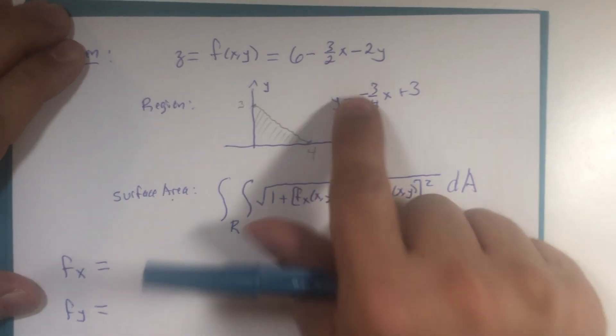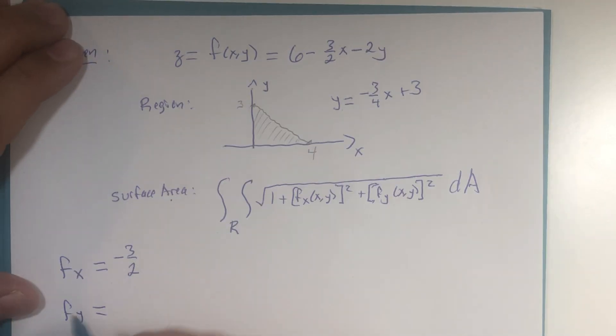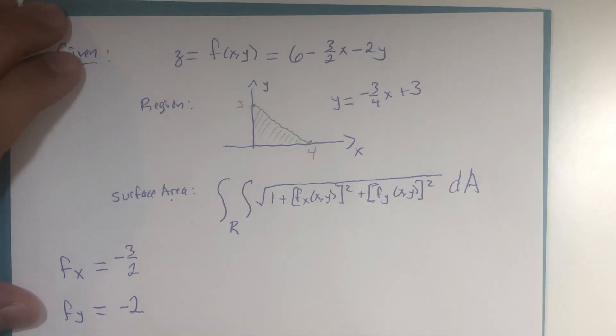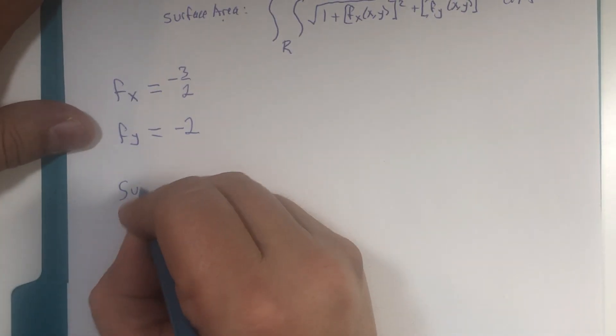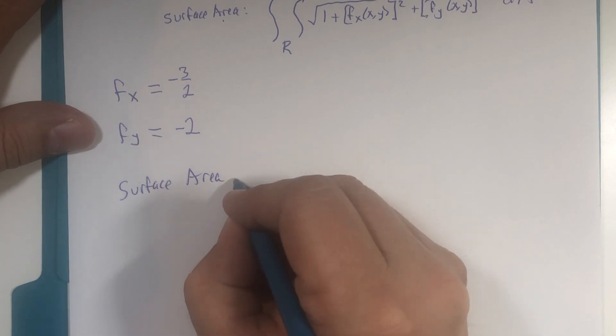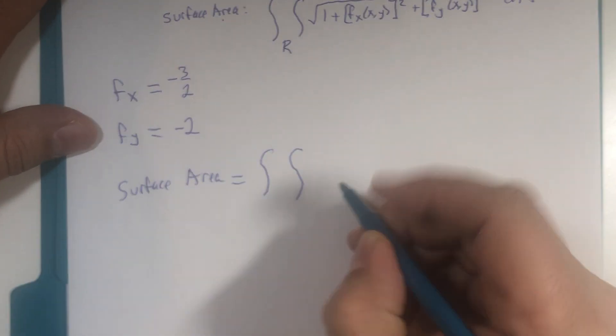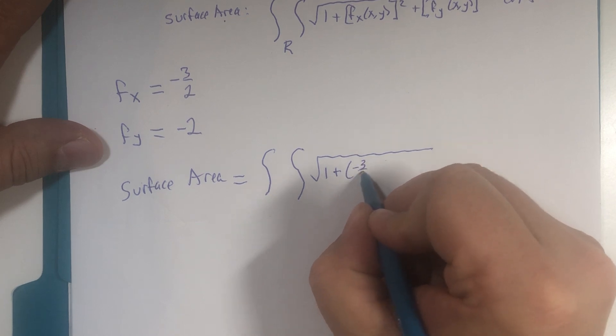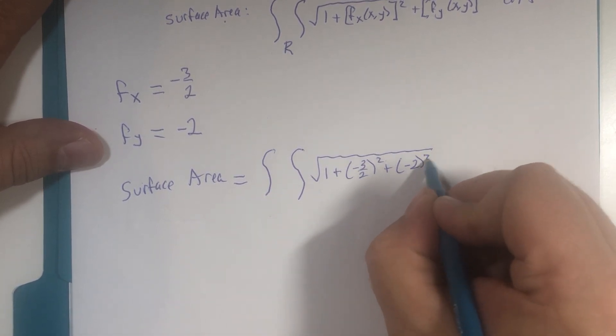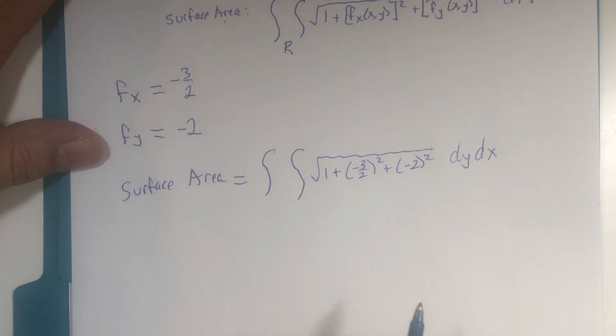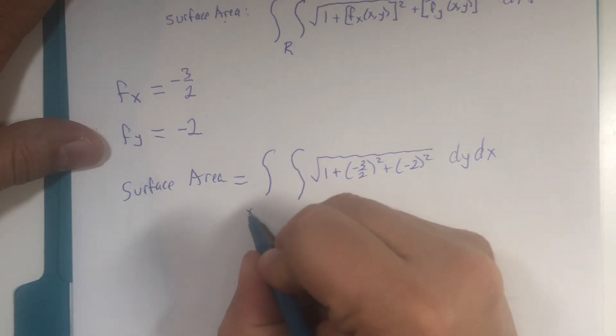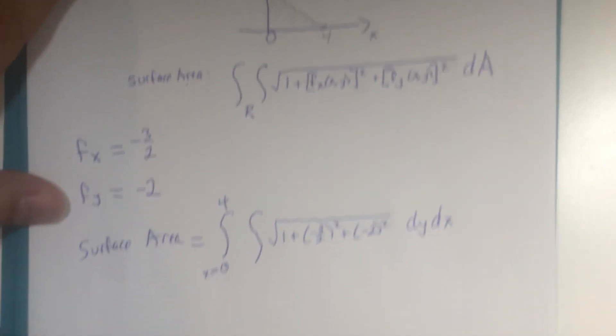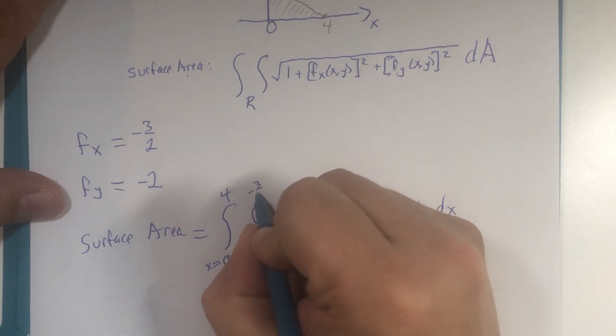And if I want, I should be easily able to collect these two partial derivatives. The x partial derivative here is negative 3 over 2. And the y partial derivative is just negative 2. So, surface area equals double integration square root 1 plus x derivative squared plus y derivative squared dy dx. And from our previous example, we already set up the region of integration. x went from 0 to 4. See the picture here? And y went from 0 to negative 3/4 x plus 3.